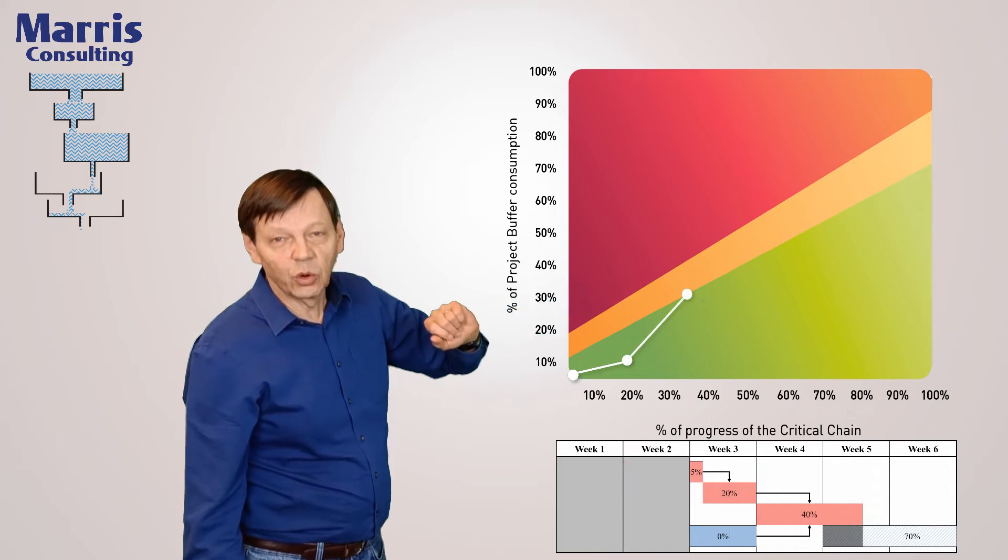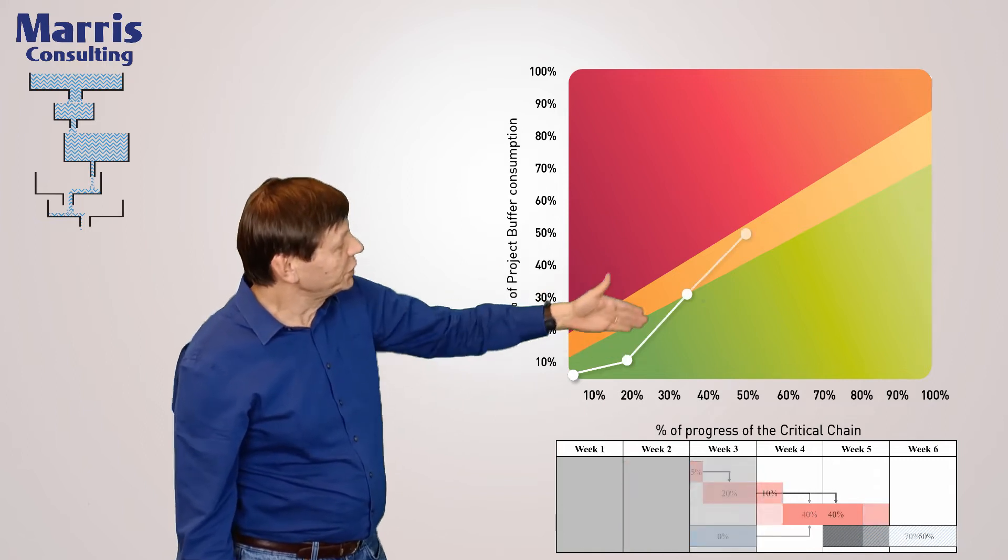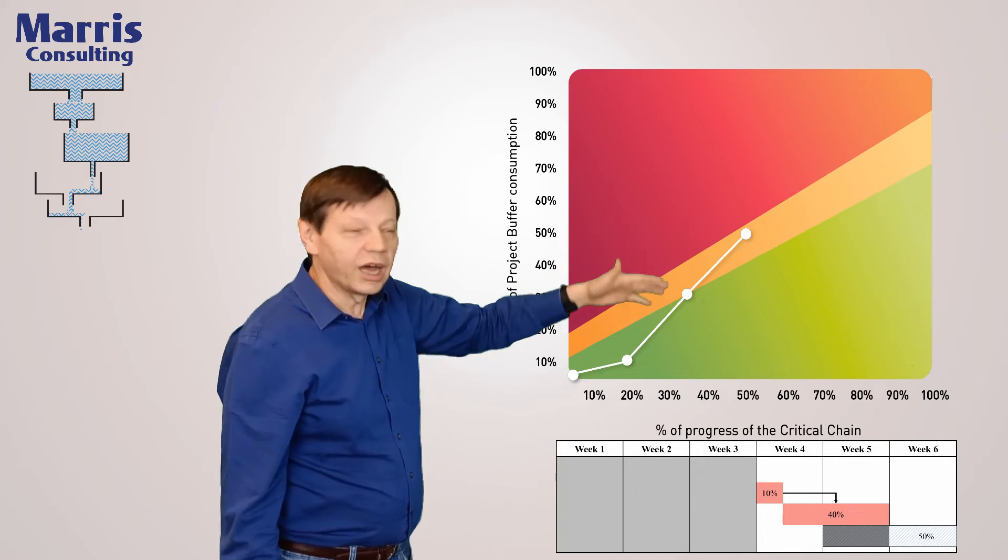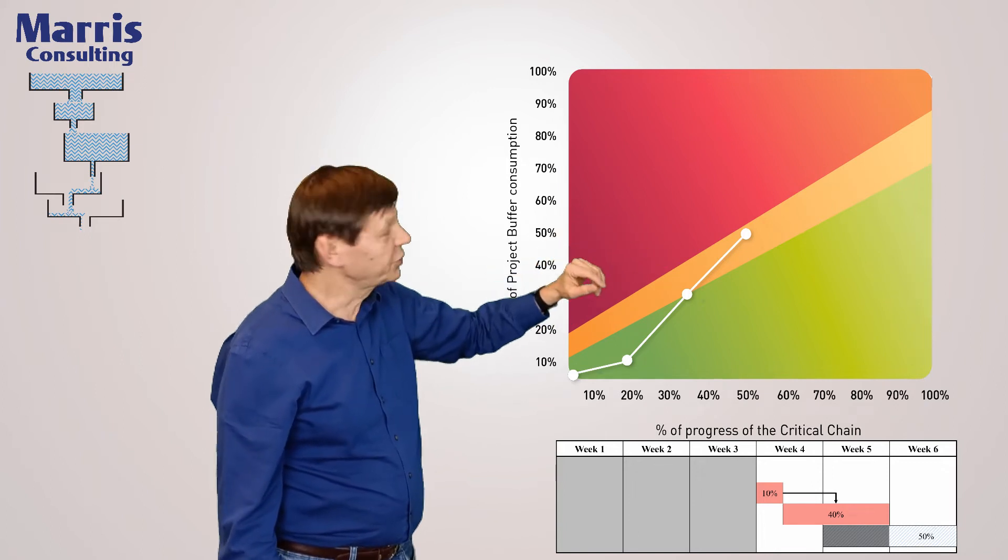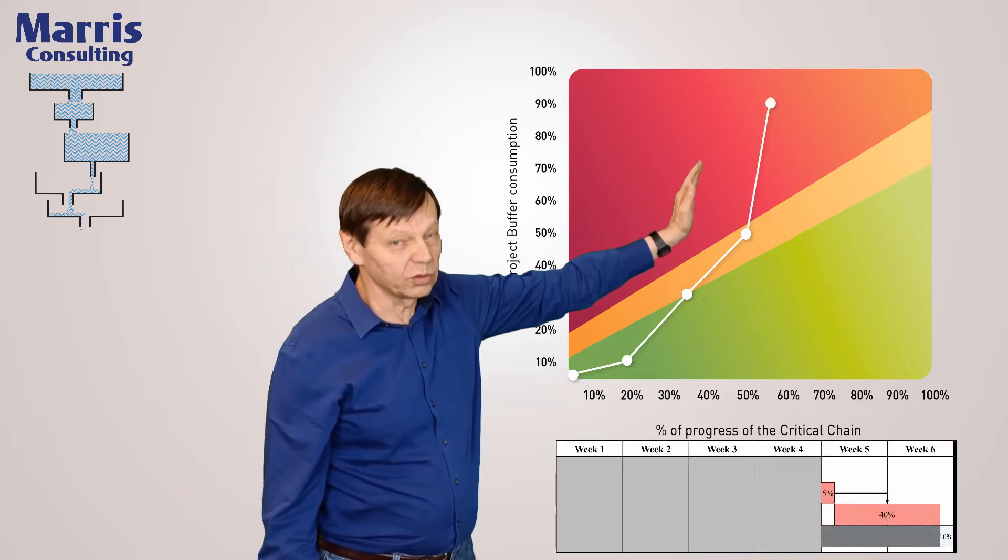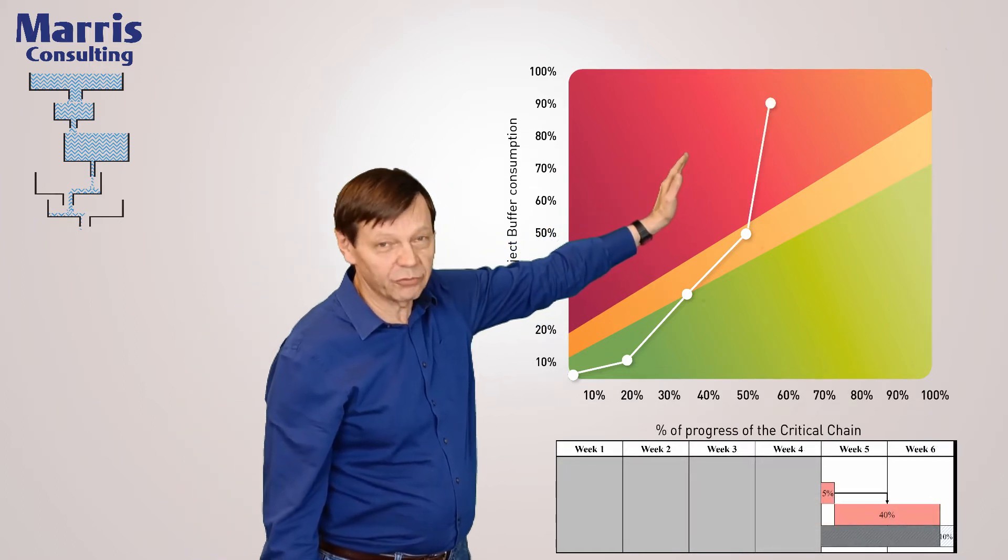Second week, even more consumption of buffer. Third week, further up. We're now getting into the orange and red zone. And on the fourth week, we didn't progress hardly at all and we're way up into the red zone.